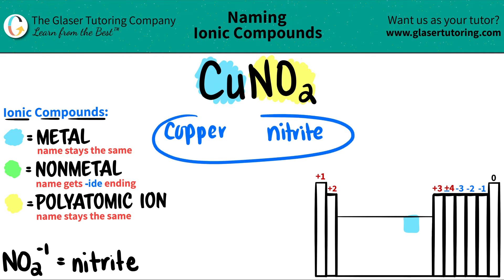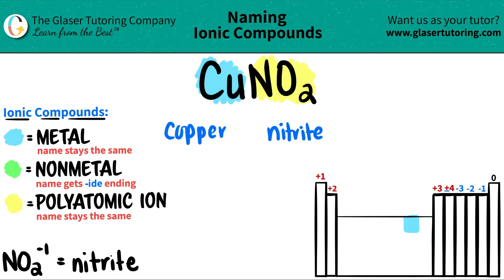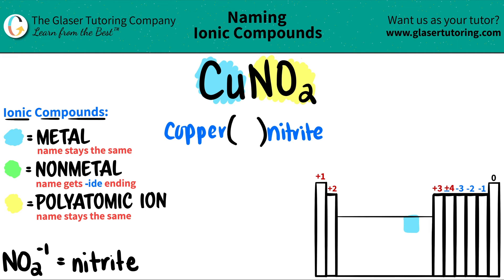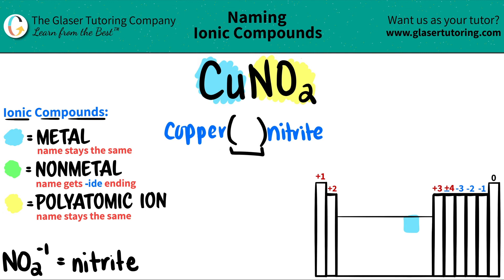So right now we know this is copper nitrite, but we need to check: do we need a Roman numeral or not? A Roman numeral needs to be added to the name if you have a transitional metal — which is this block right here. And since copper is in that block, we do need a Roman numeral. The Roman numeral is always the charge of the metal.